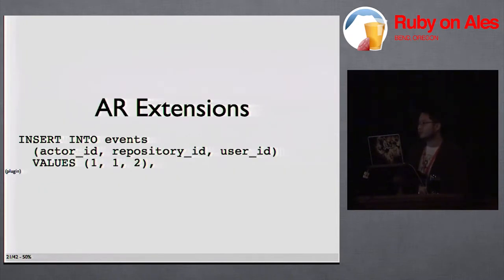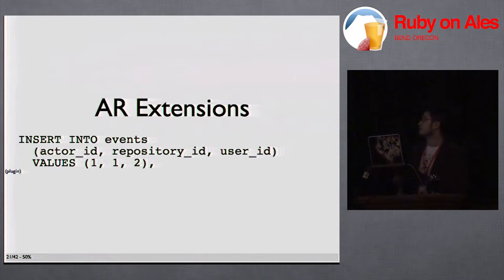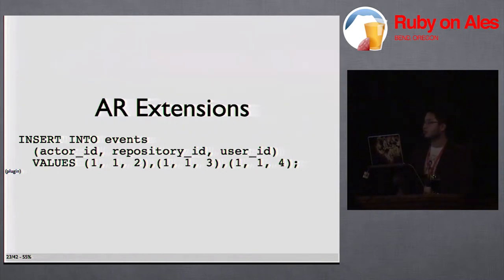To keep up with the load when you have people with thousands of followers and repos with thousands of watchers, we use this plugin called AR Extensions. It basically lets you do bulk inserts with MySQL. This is a standard INSERT statement where you just pass in multiple values. So when we figure out all the followers that a user or repo has, we build up these big queries and send them off to the database — instead of saving a thousand individually, we might send like a hundred at a time.